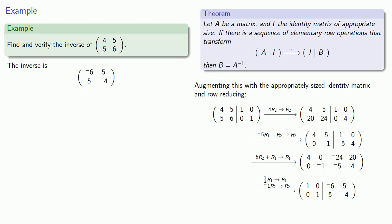And so we claim that this matrix negative 6, 5, 5, negative 4 is the inverse matrix. Well, let's see what happens when we multiply it. So if we multiply on the right by this matrix, we get the identity matrix. And so this really is the inverse.